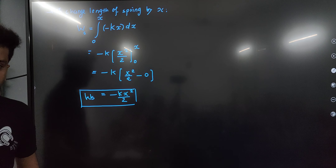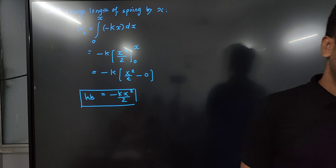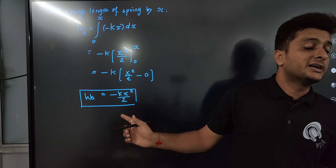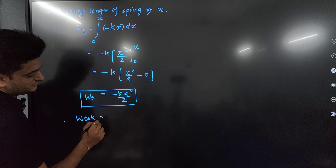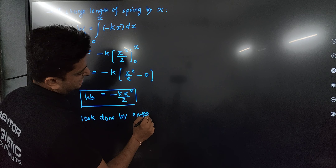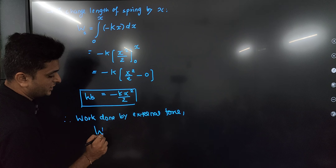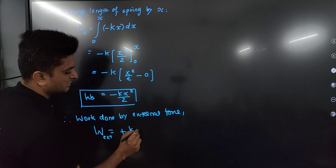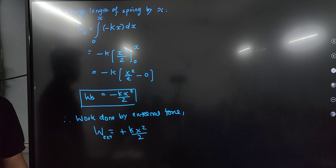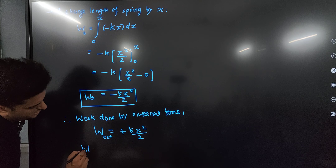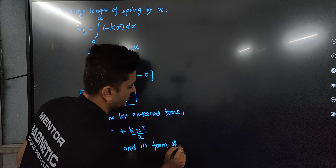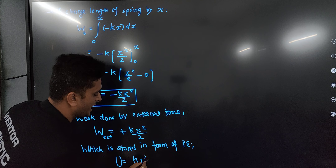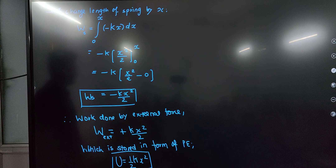Since the work done by the spring force is negative (-kx²/2), the work done by the external force is positive: +kx²/2. The external work you do gets stored inside the spring in the form of potential energy. Therefore, the potential energy of the spring = ½kx².